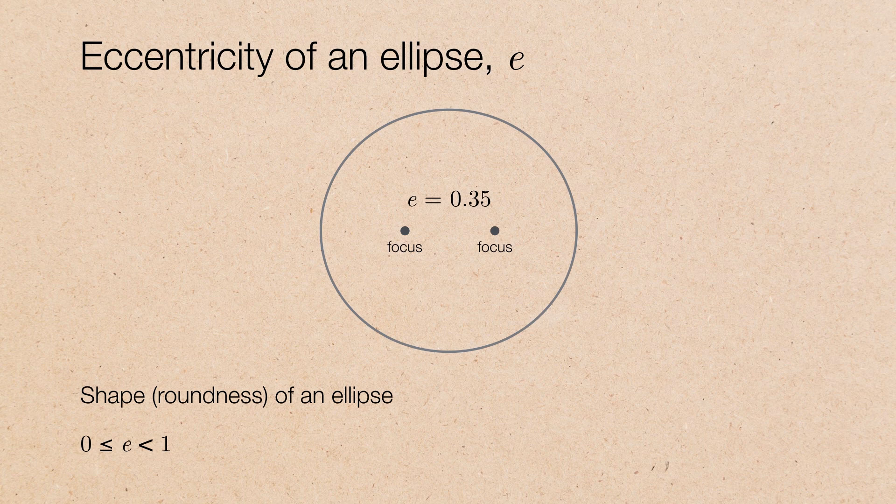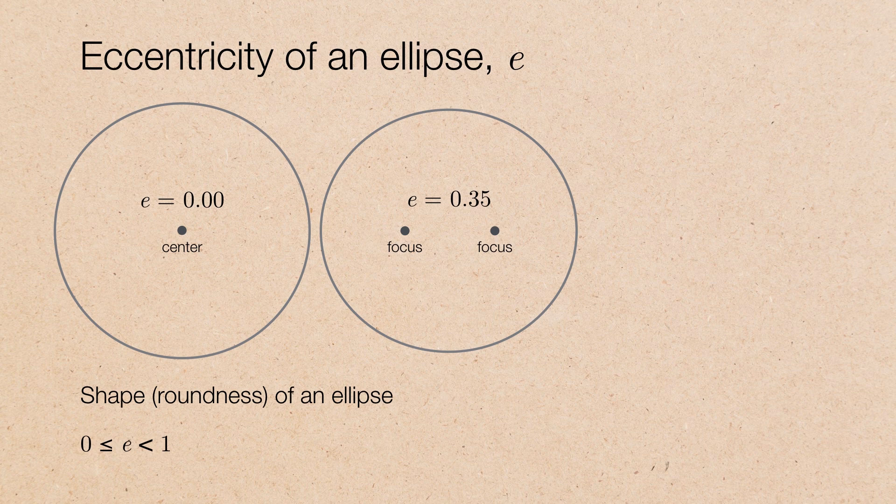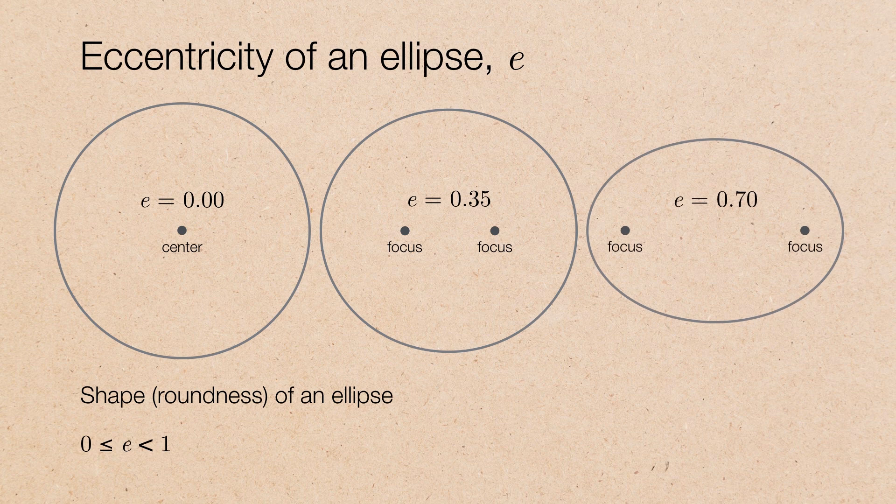And there's no unit associated with this. It's not measured in feet or kilometers or astronomical units. Rather, it's just a unitless number. So as long as it's less than 1 all the way down to 0, you have an ellipse. That means that if we bring the two foci together to form a center, the eccentricity falls to 0. Or we could spread the two foci apart, and in this case, we can see a fairly flattened, football-shaped ellipse with an eccentricity of 0.7.